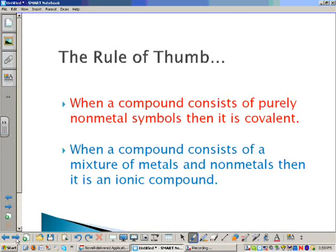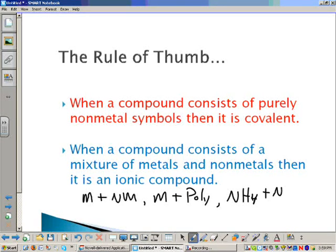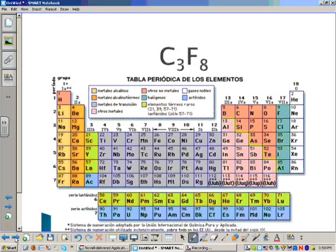That's the only positive polyatomic ion called ammonium. So if it's a metal plus nonmetal, we could have a metal plus a polyatomic ion, or we could have NH4 plus a nonmetal. Those are three categories of ionic compounds.